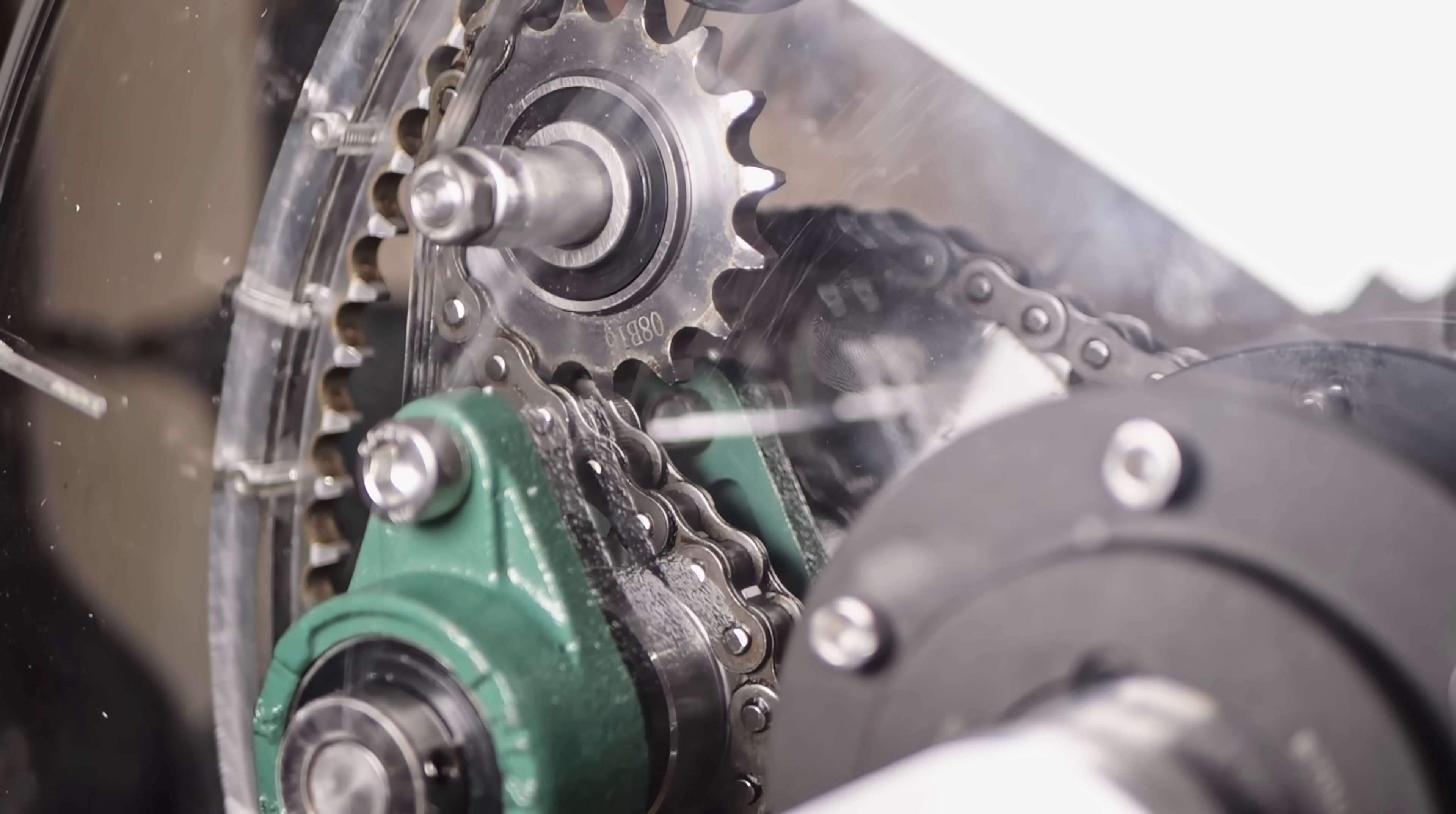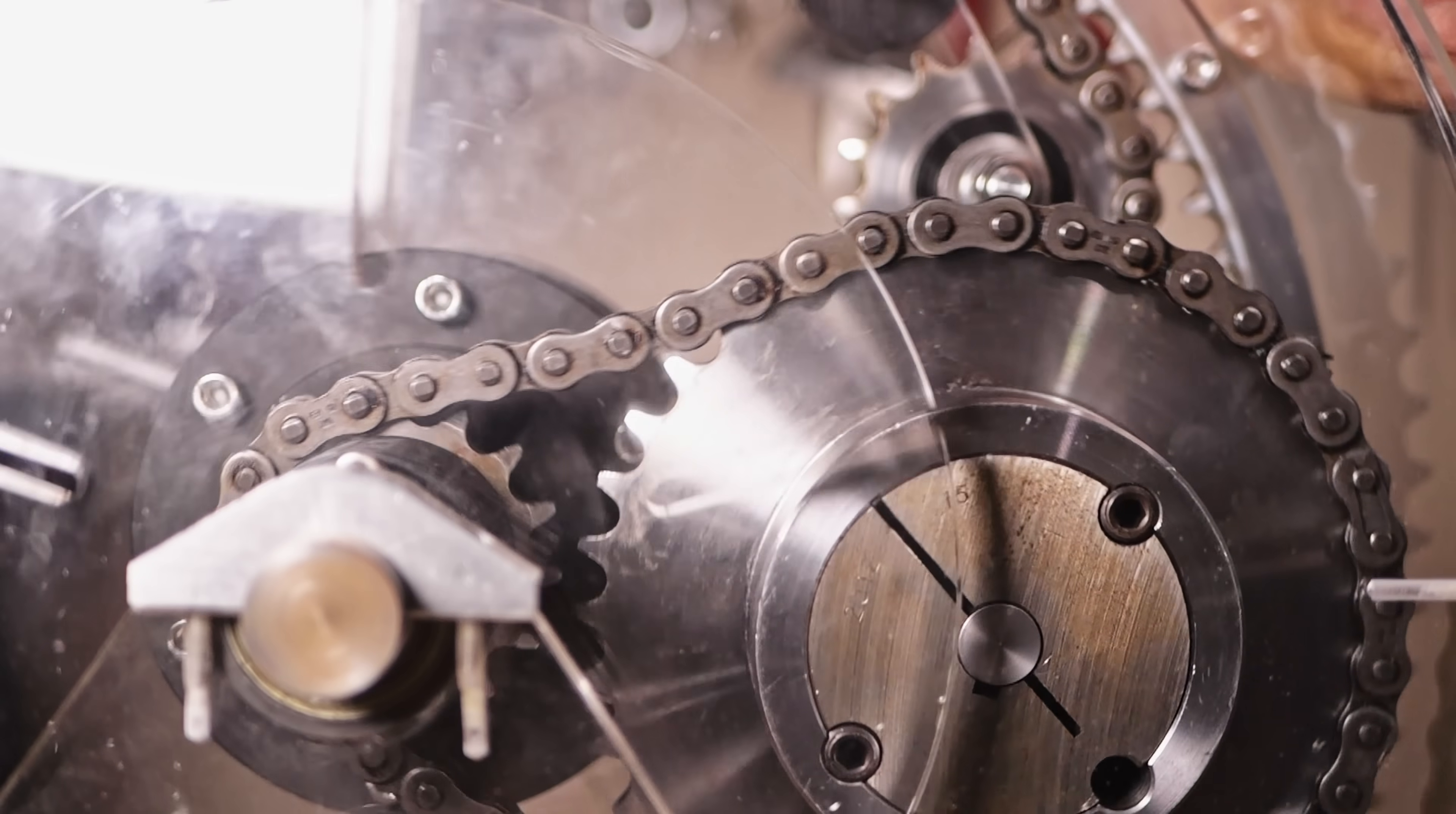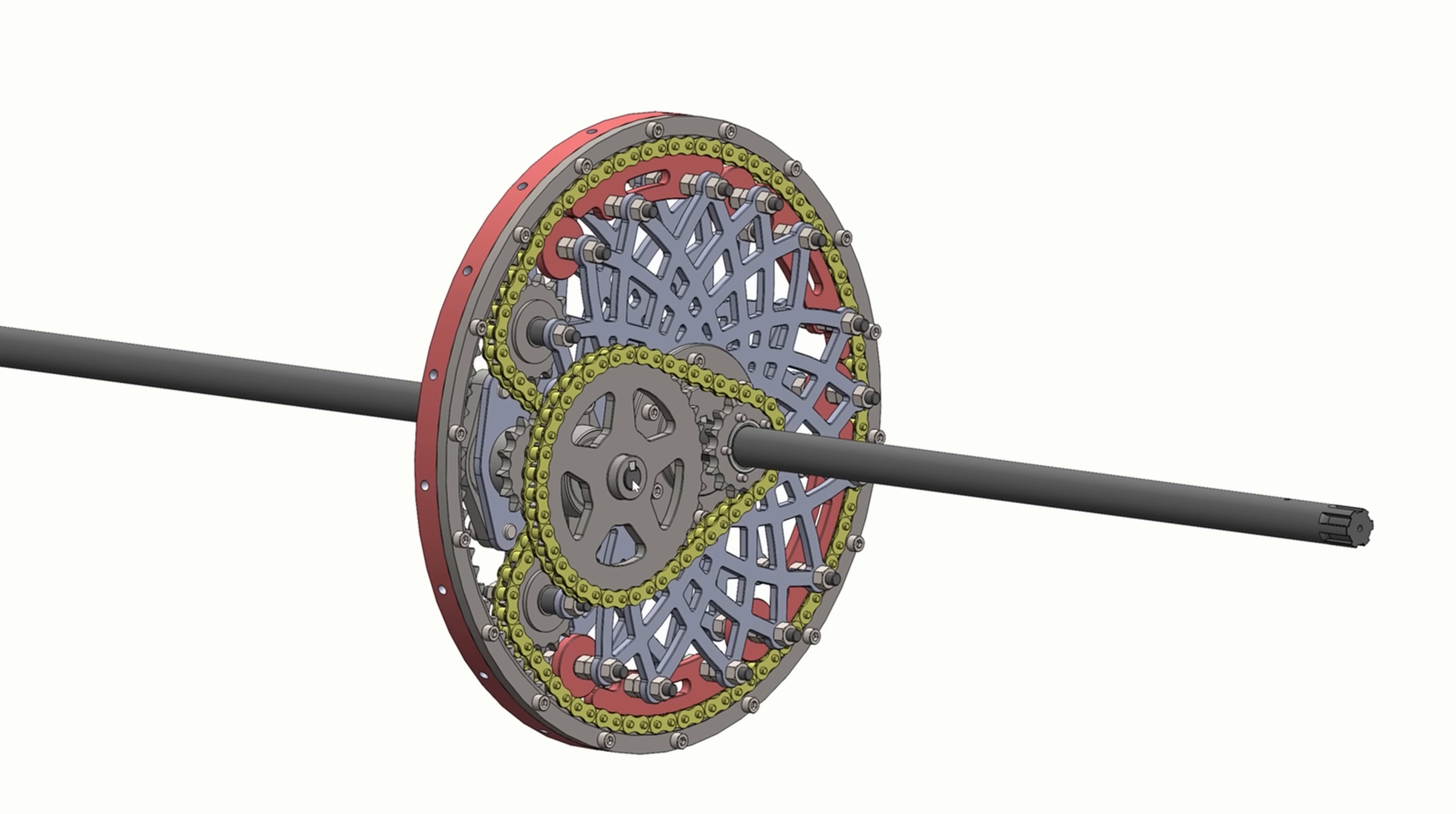Secondly, there's not a very good way to tension the chain at the moment or deal with any chain stretch that might happen over time. I just didn't have time or space to implement chain tensioners in this design. One of the most difficult parts of the design actually was getting the correct spacing of the sprockets and the rollers so the chains on both stages are tensioned correctly.